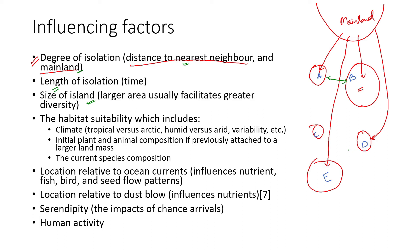Additional influencing factors include habitat suitability — even if an area is large and nearby, unsuitable habitat prevents colonization; location relative to ocean currents and oceanic movements, including seed flow patterns, dispersal patterns, and nutrient cycles; serendipity — the impact of chance, meaning which species arrives first affects the rate of colonization; and human activity.